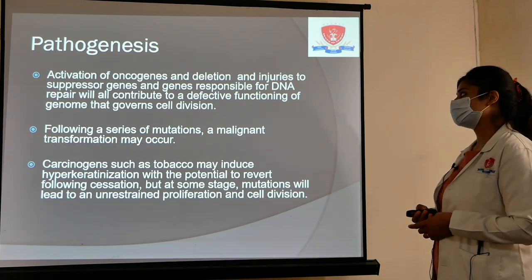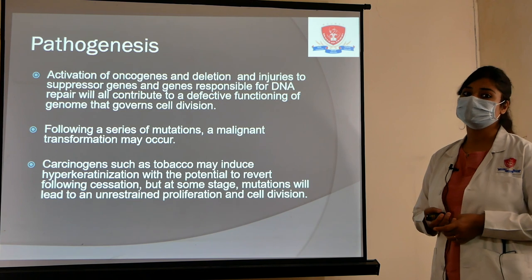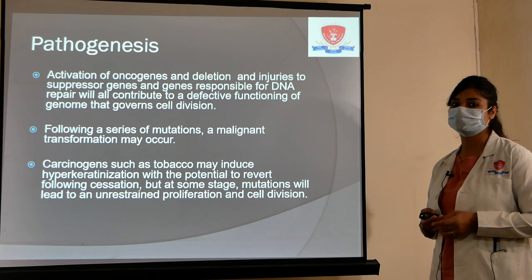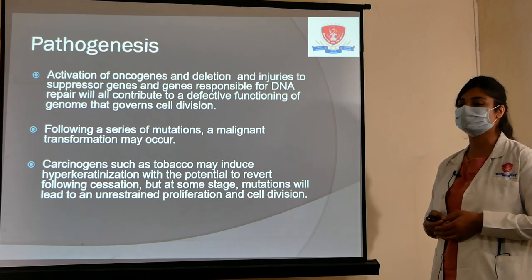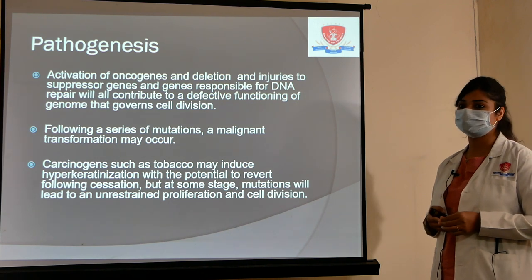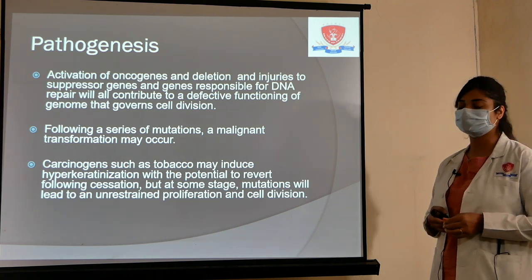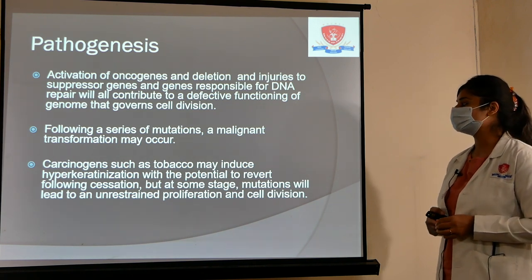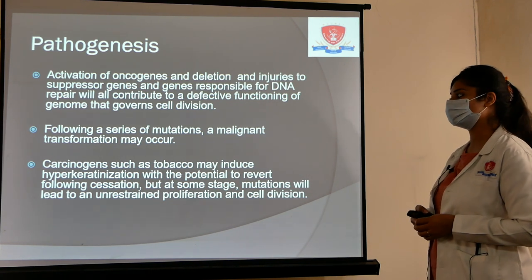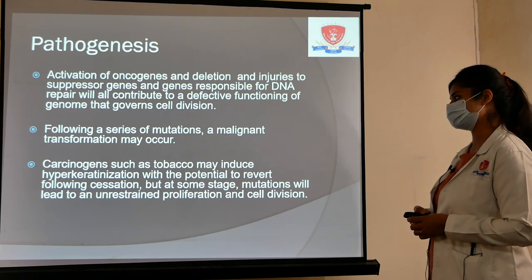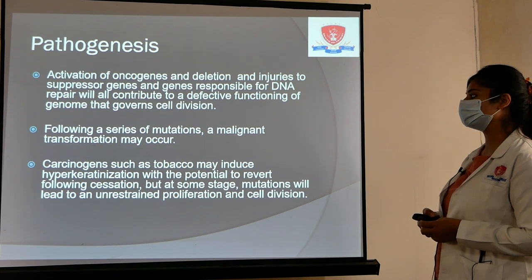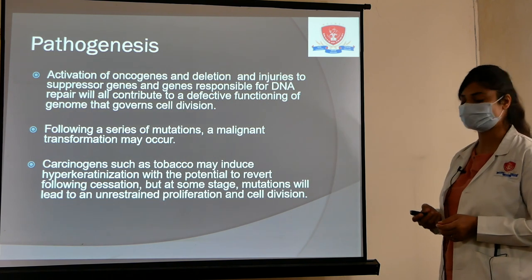Following a series of mutations, malignant transformation may occur. When there is mutation of the tumor suppressor gene and activation of the oncogene, the gene responsible for DNA repair will not function well, converting the process into carcinogenesis. Carcinogens such as tobacco may induce hyperkeratinization with potential to revert following cessation, but at some stage mutation leads to unrestrained proliferation and cell division.